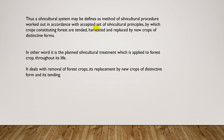Thus, a silvicultural system may be defined as the method of silvicultural procedures worked out in accordance with an accepted set of silvicultural principles, by which crops constituting forests are tended, harvested, and replaced by a new crop of distinctive form.